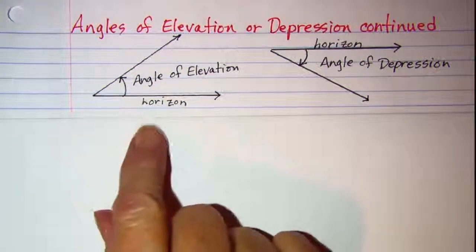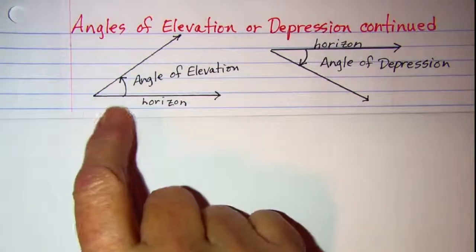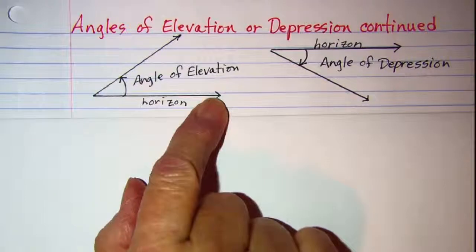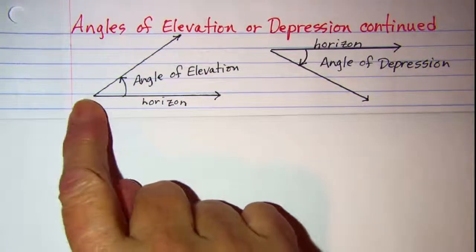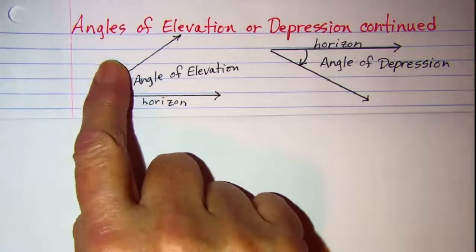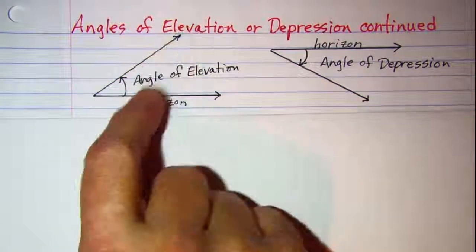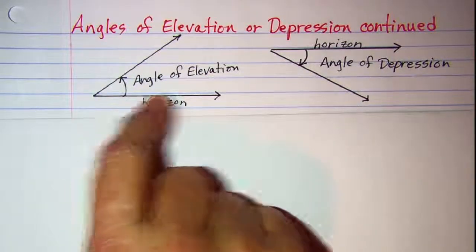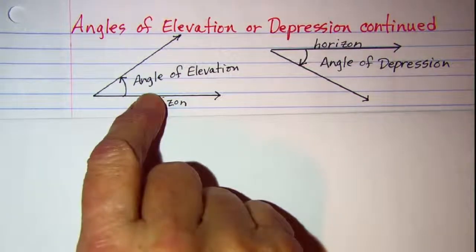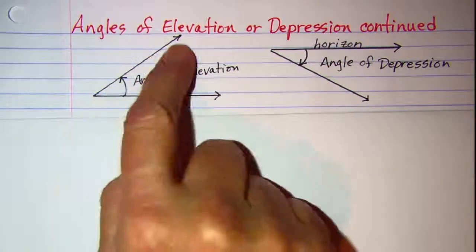Recall that for an angle of elevation, the angle is formed with the horizon or horizontal line, and then we move counterclockwise and go up. So the angle of elevation is formed by this horizontal line and the ray that goes up.